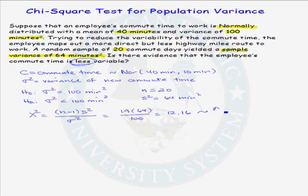This test statistic has a chi-squared distribution with n minus 1 degrees of freedom, or for this problem, it is chi-squared distribution with 19 degrees of freedom.